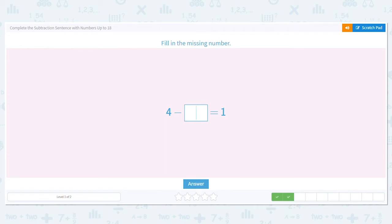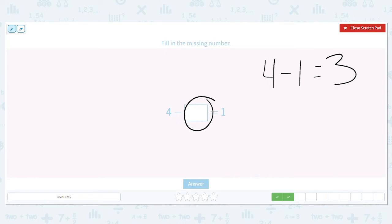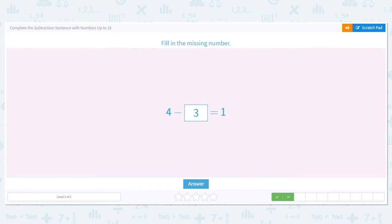Next fill in the missing number again. We have 4 minus blank equals 1. Using what I know about fact families I'm going to take my 4 and my 1 and I'm going to subtract it. That will give me what I'm missing here. So what is 4 minus 1? 4 and 1 lower is 3. So we can also say that 4 minus 3 equals 1.